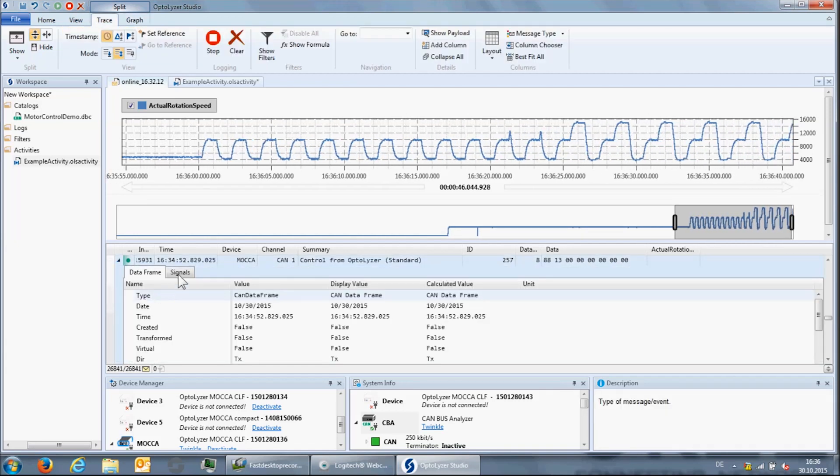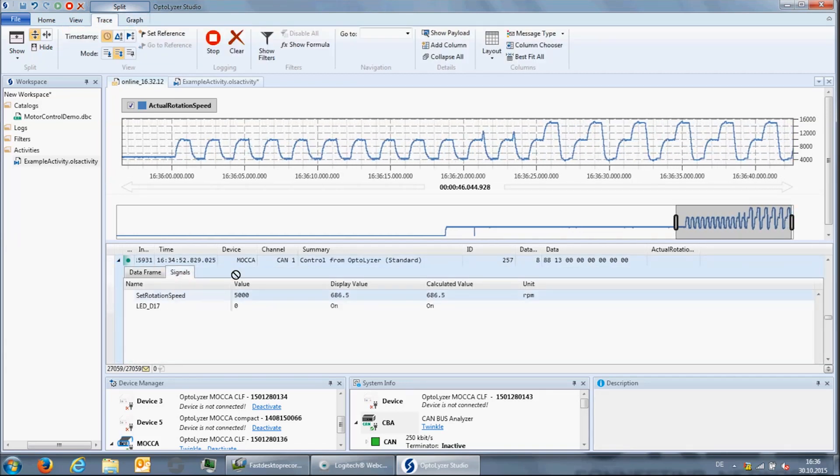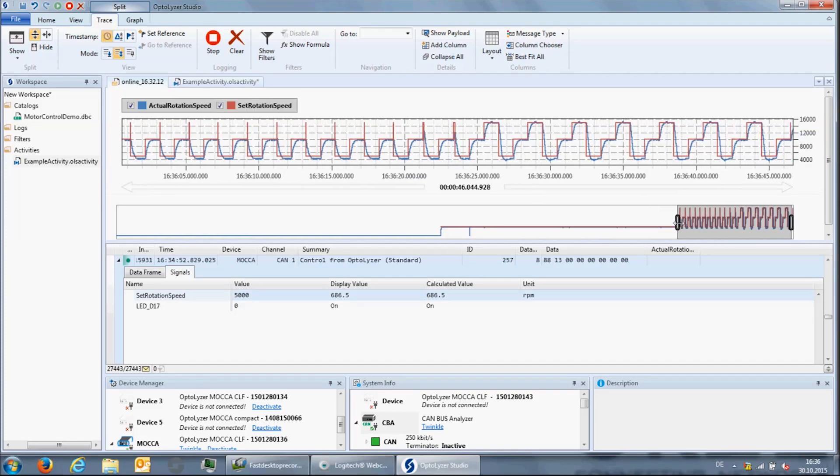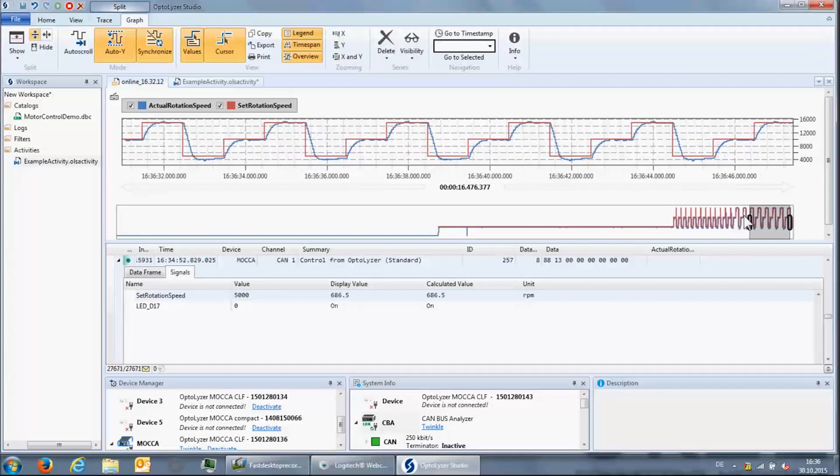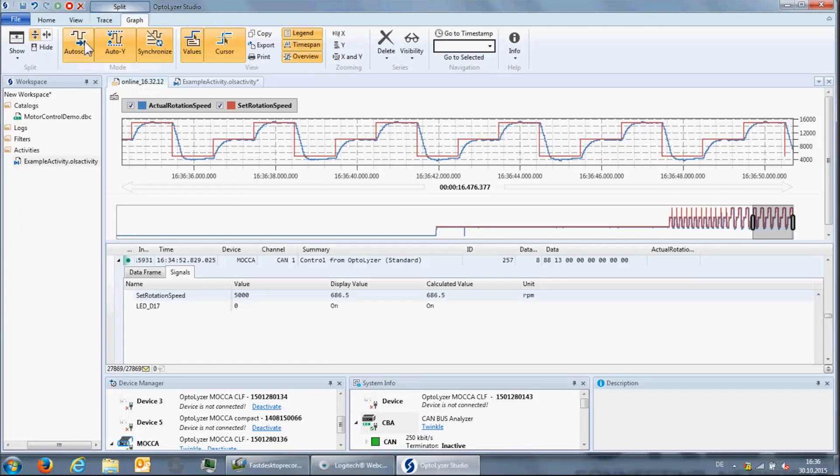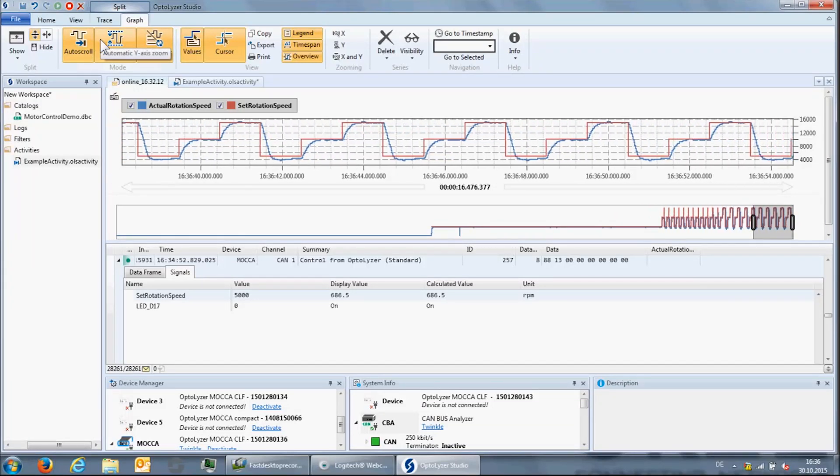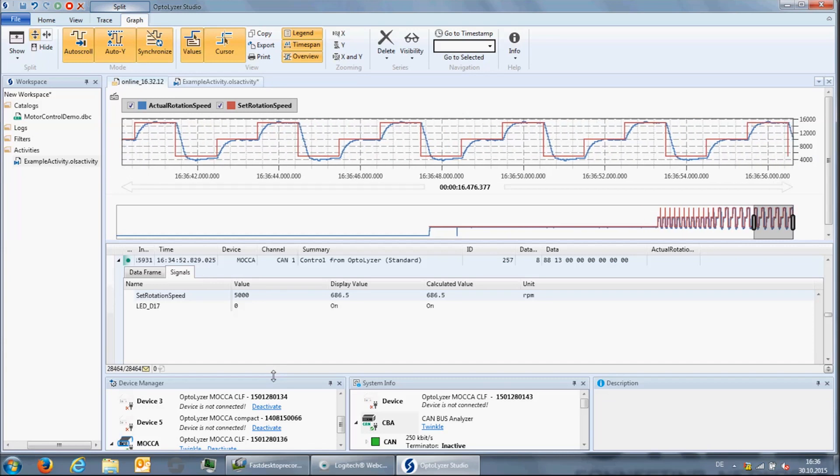So let us add the set value of the rotation speed that is sent in the control messages from the mocha to the signal graph. As you can see, the set rotation speed runs ahead of the actual rotation speed, which is of course no surprise.